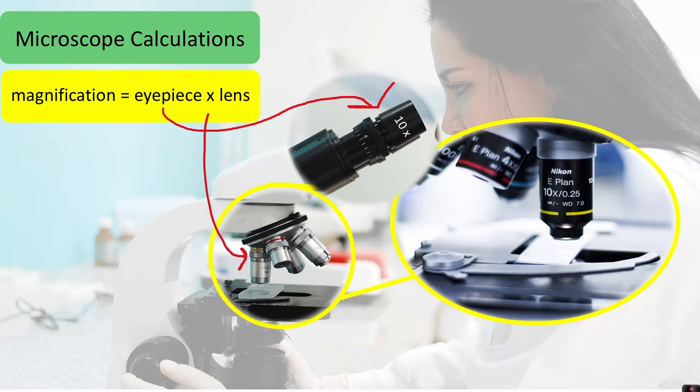You can see the yellow one here is 10 and next to that the red one is 4 and the one to the left which you can't quite see is a hundred times. When you do your calculation you do the number on the eyepiece multiplied by the number on the lens you are using. So in this case we would have a magnification of 10 from the eyepiece multiplied by 10 from the lens which means we will be viewing our object at a hundred times magnified.